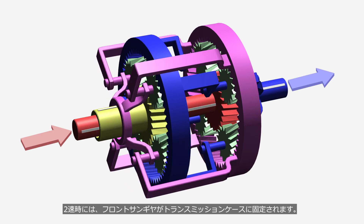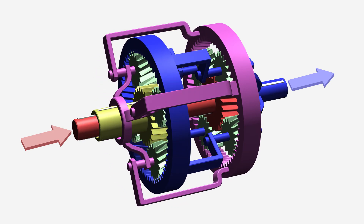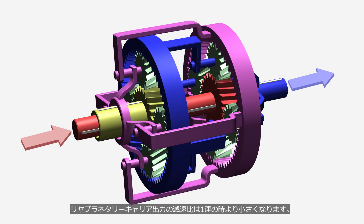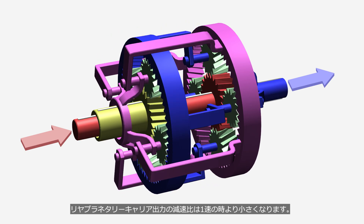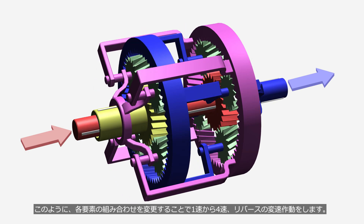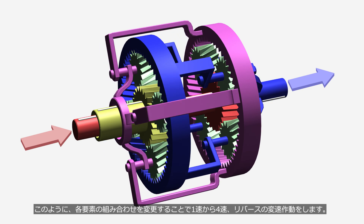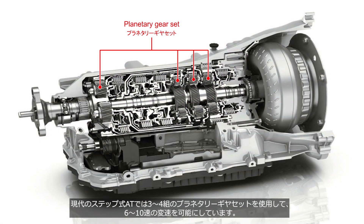At second gear, the front sun gear is fixed to the transmission case. Since the rear internal gear rotates, the reduction ratio of the output from the rear planetary carrier is smaller than at first gear. In this way, by changing the combinations of each element, the transmission shifts from first to fourth gear, as well as in reverse. Modern step-type automatic transmissions use three to four sets of planetary gears to enable six to ten speeds.